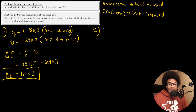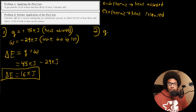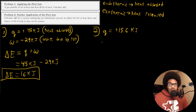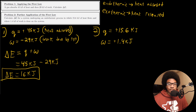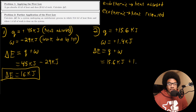For problem two, we have an endothermic process in which 15.6 kilojoules of heat flows, meaning our system is gaining 15.6 kilojoules of heat. So q is going to be positive 15.6 kilojoules because the heat is absorbed. Now, 1.4 kilojoules of work is done on the system — work done on the system is going to be positive, so w is positive 1.4 kilojoules. Applying the first law, delta E equals q plus w: positive 15.6 plus 1.4 kilojoules gives us 17.0 kilojoules of total energy change.